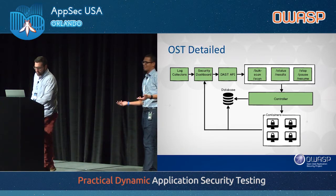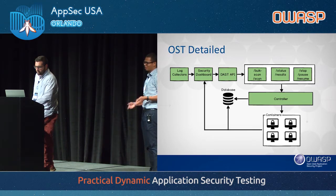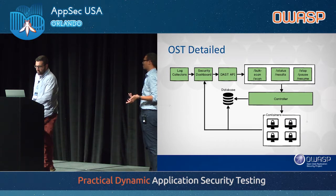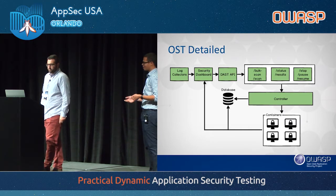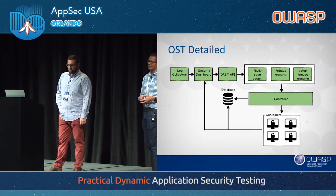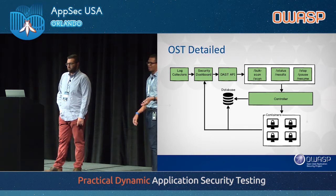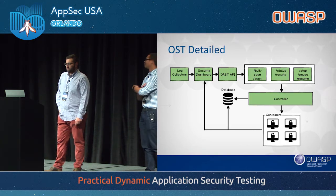You're not limited to ZAP — you could use basically any scanner that supports passive scanning and have a deployment script written within a container. All you really need is proxy information and a basic script for that container to run and pull in any dependencies it might need to scan, including proxy chain information.